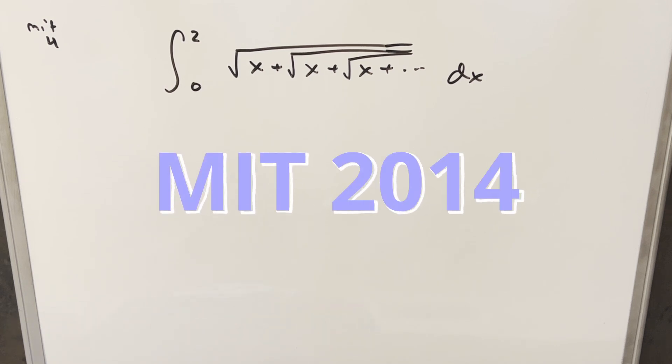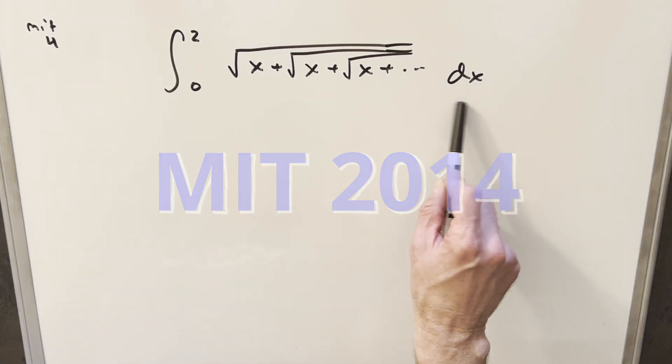Okay, we have here today an interesting integral from the MIT integration B2014. This was problem four. We have the integral from zero to two of this infinitely nested expression, dx.